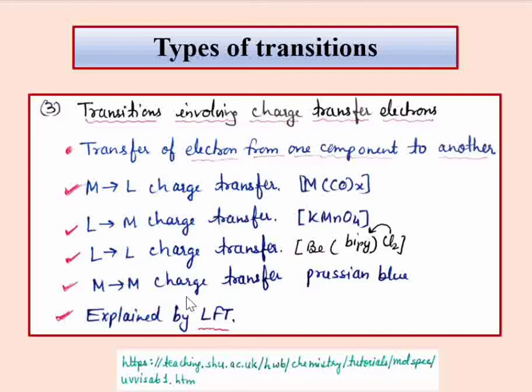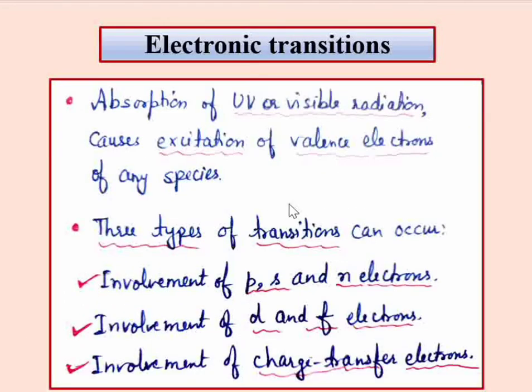Charge transfer transitions can be explained by ligand field theory. Electronic transitions are very important, and electronic spectra is a very important spectroscopic technique that allows us to explain the nature of bonding in a particular compound — what kind of bonds are present — as well as the magnetic properties of complexes.